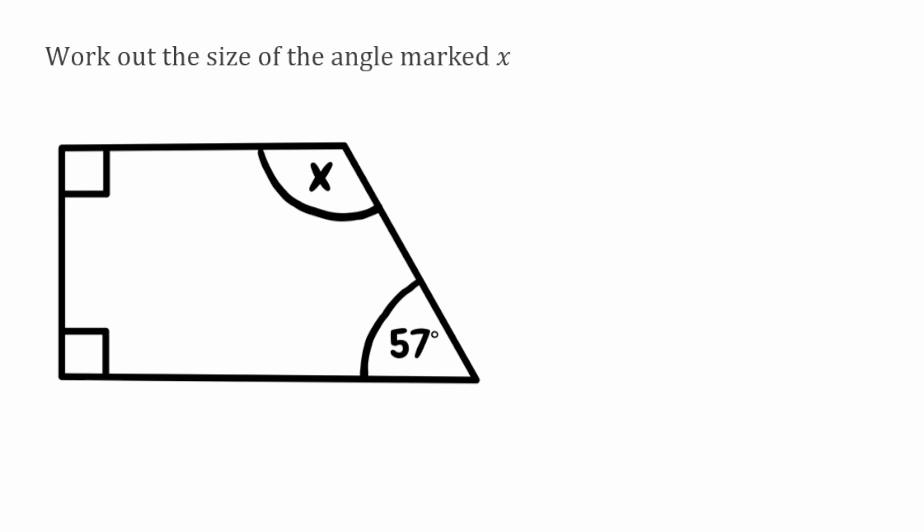For this next question we're finding the missing angle x again. We can see we've got 57 degrees in that bottom right corner, but then for the angles on the left hand side we've got two right angles. So we need to use the fact that a right angle is 90 degrees and we've got two of them. So what we're going to do for this one is we're going to take our two right angles of 90 degrees and we're going to add them together, and we're then going to add on that 57 degrees as well, and once we do that we get 237.